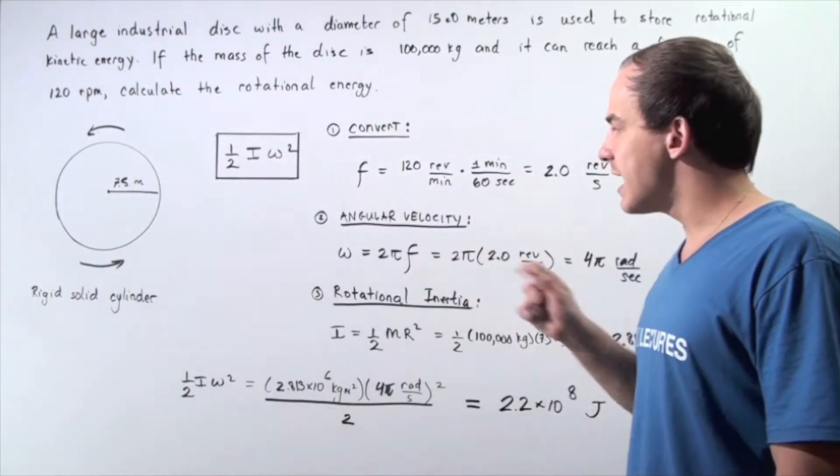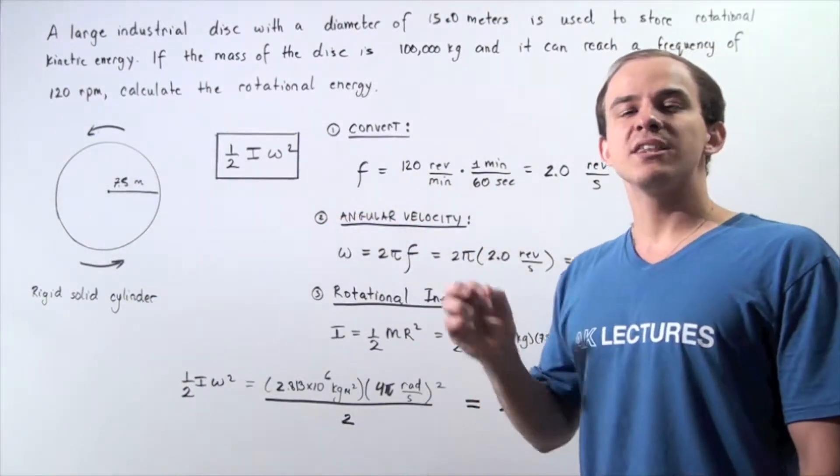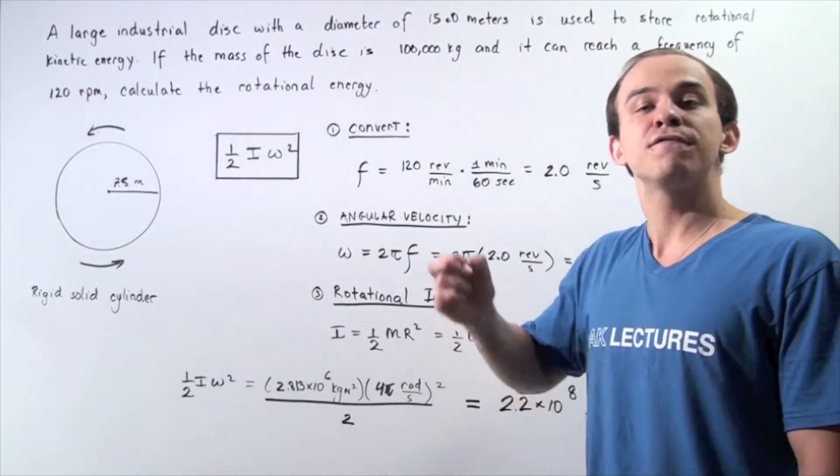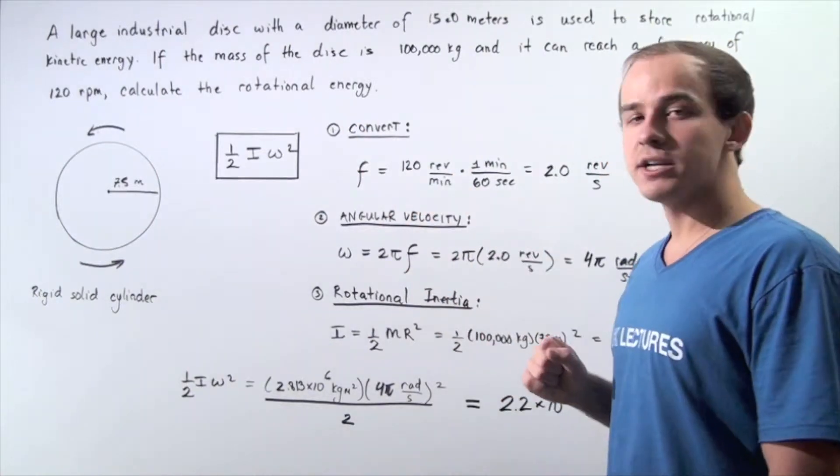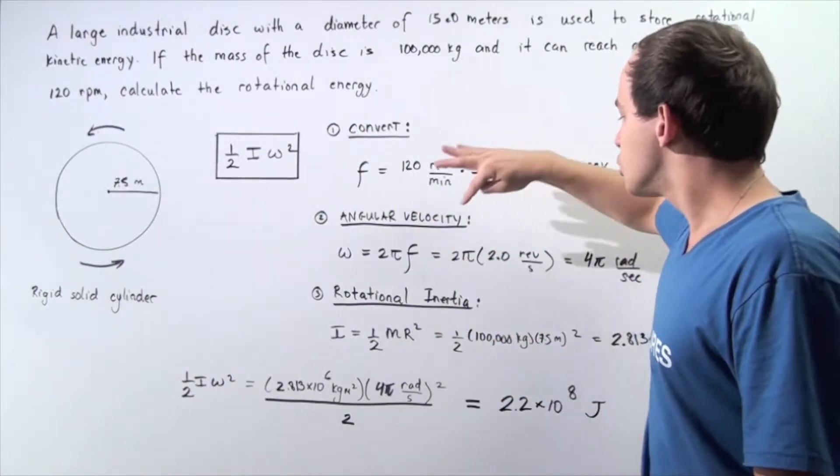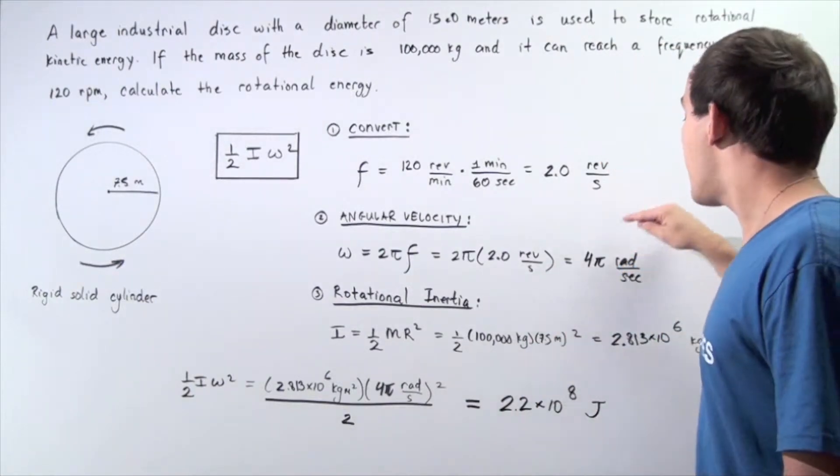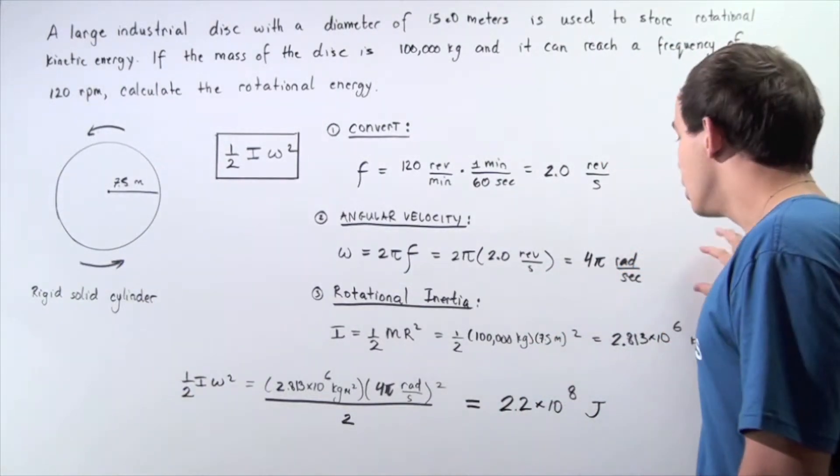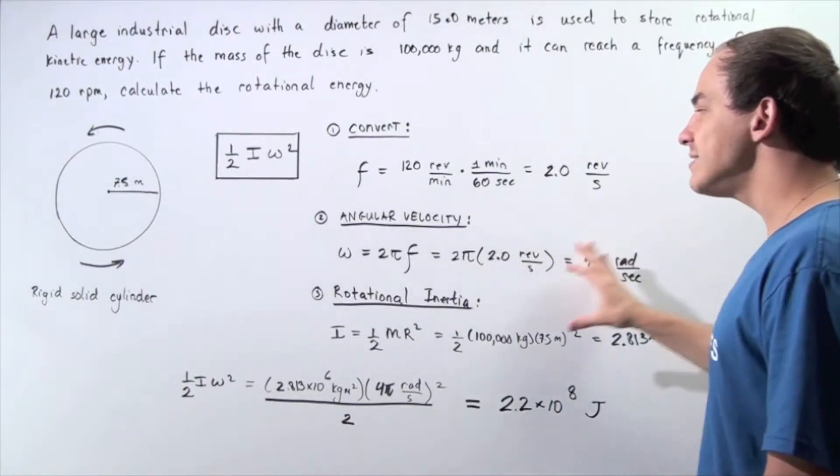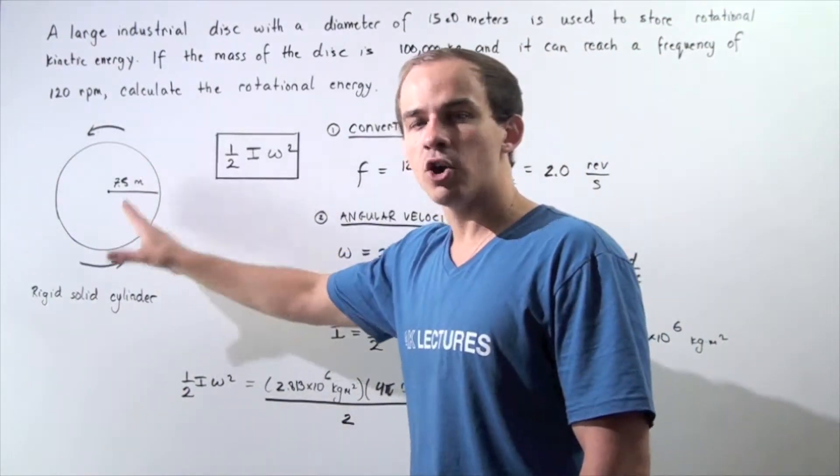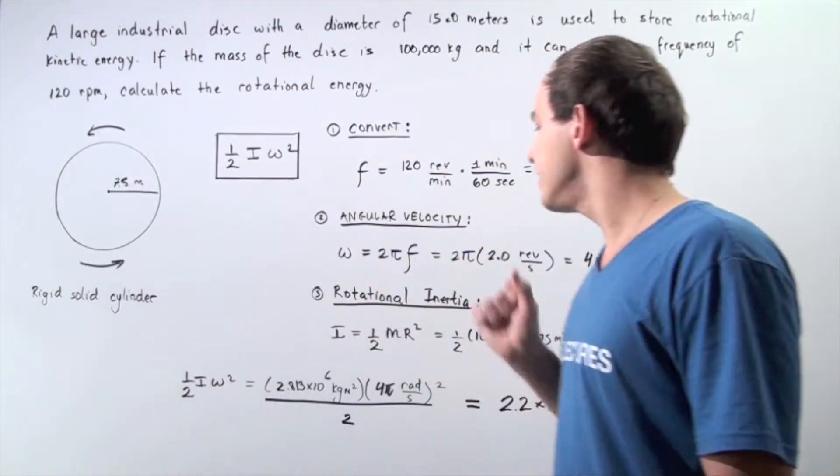In the second step, to find the angular velocity, we take the product of 2 pi and the frequency found from part a. So, 2 pi multiplied by 2, we get 4 pi radians per second. So this is the angular velocity of every single point on our rigid solid cylinder.